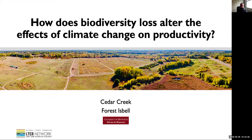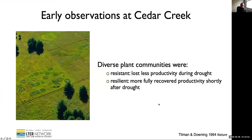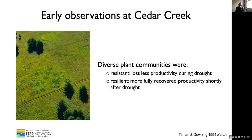This comes back to the idea that diversity might provide some stability of productivity in the face of natural climate variability or extreme climate events. These ideas go back to early work — there was a major drought in Minnesota in the upper Midwest in the late 1980s. A paper published in 1994 by Dave Tilman and John Downing showed diverse plant communities at Cedar Creek were more resistant and more resilient: they lost less productivity during the drought and recovered more quickly. But questions were raised because these were fertilized experimental plots, so low diversity communities were fertilized and high diversity communities were unfertilized, raising questions about whether these were diversity effects on stability or fertilization effects on decreasing stability.